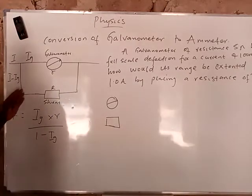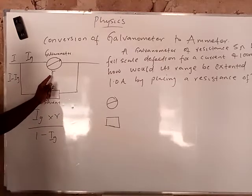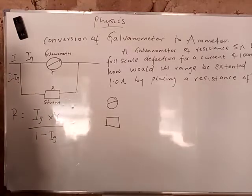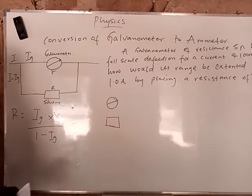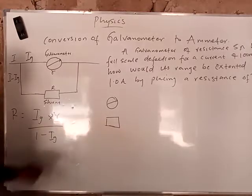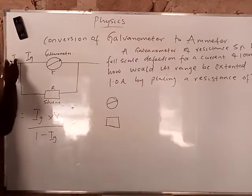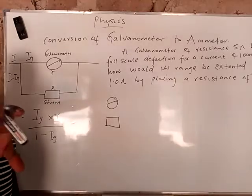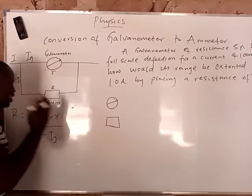Now, you can see from this circuit that here is a galvanometer. This one is the resistance of the galvanometer, which is small r. The shunt resistance, which is the low resistance connected in parallel, is represented with capital R. And this I is the current of the ammeter.